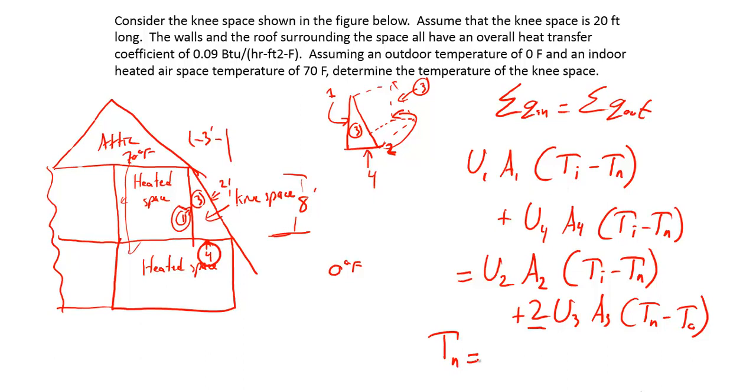What you're trying to solve for is the temperature of the knee space. We have the inside temperature. U1, A1, U4, and A4 is the difference between the inside temperature and the temperature in the knee space. You're trying to solve for T sub N. For the walls that share surface of the outside, which is surface two and three, it's the difference between the outdoor temperature and the knee space. If you do all the math and you solve for the knee space temperature, you should get 32.7 degrees Fahrenheit.